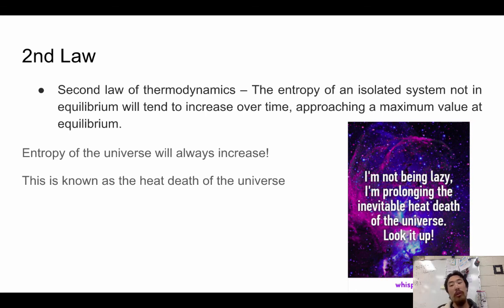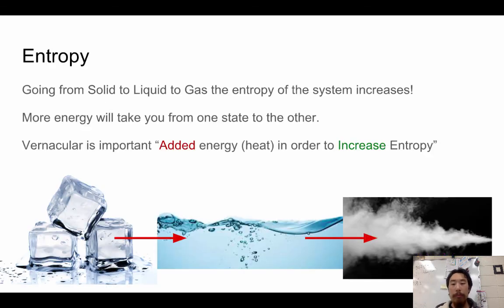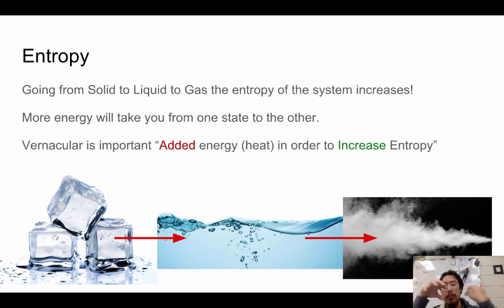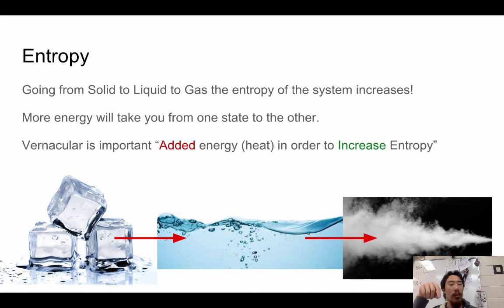This is what we call the heat death of the universe. The easiest way to think about entropy: going from solid to liquid to gas — ice, water, steam — the entropy always increases, because energy must be added for each state change to happen. We can add energy to increase entropy; we can't 'add entropy' directly. We can cause a system to have more entropy. And going in reverse — from gas to liquid — you remove energy and decrease that system's entropy.